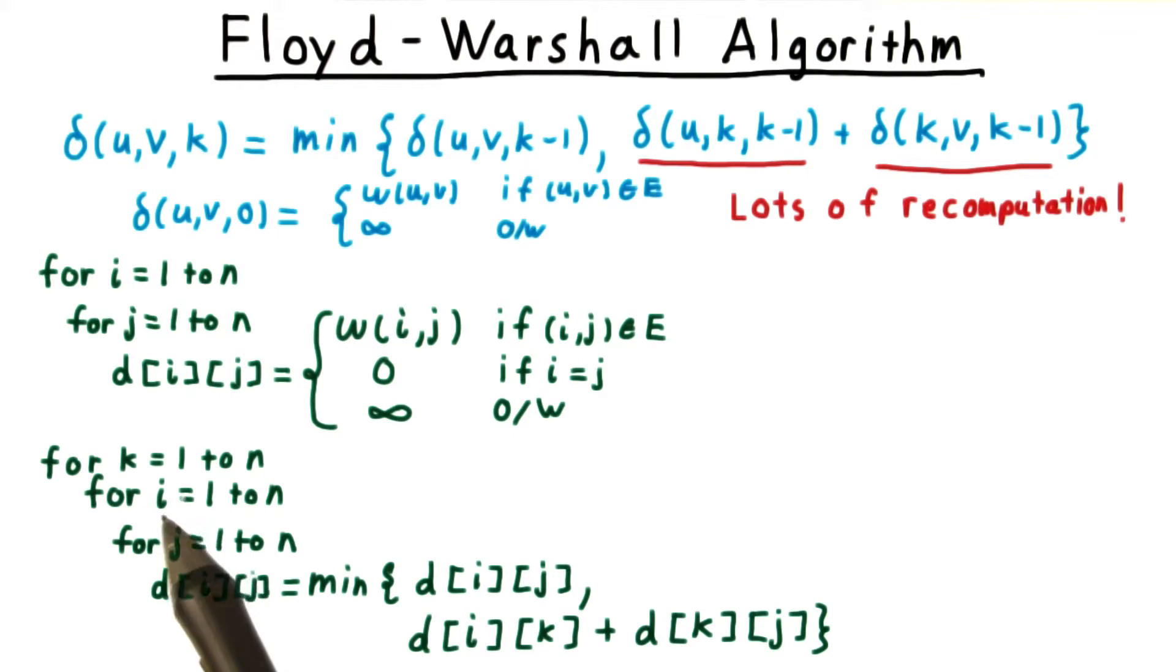Note that when i or j is equal to k, this weight here won't change, since a vertex can't be useful in a shortest path to itself.